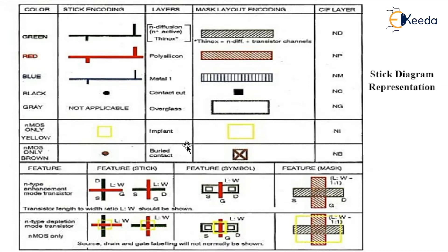Regarding implantation: MOSFETs are of two types — PMOS and NMOS. Under NMOS, there are two types: enhancement mode and depletion mode. In depletion mode, there is an implantation between source and drain, which is represented with a yellow box.